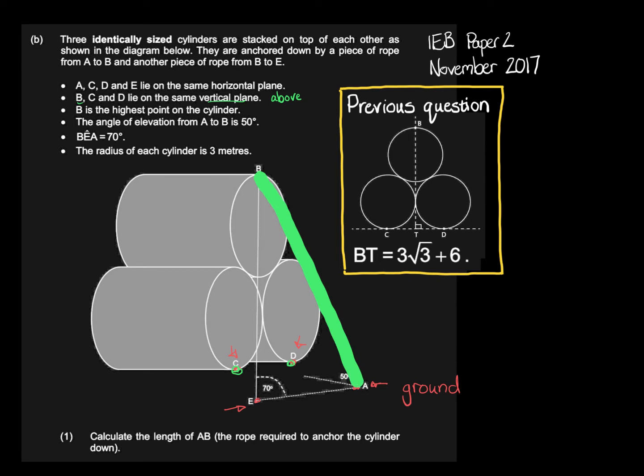Question 1 says calculate the length of AB, the rope required to anchor the cylinder down. I'm going to redraw the diagram where I'm only going to draw from B to T, where T is ground level right in the middle, and then I'm going to draw that other point A. I know that's 50 degrees and that's 90 degrees. We've been told that BT is 3√3 + 6.